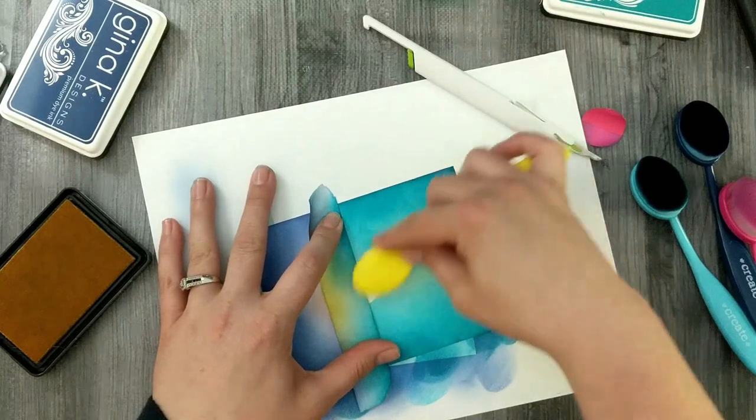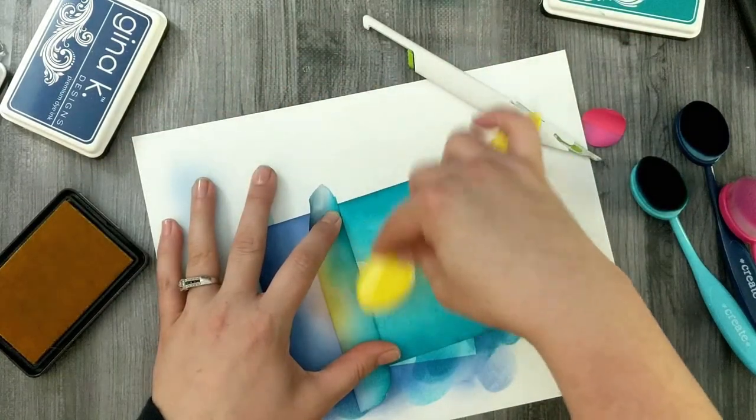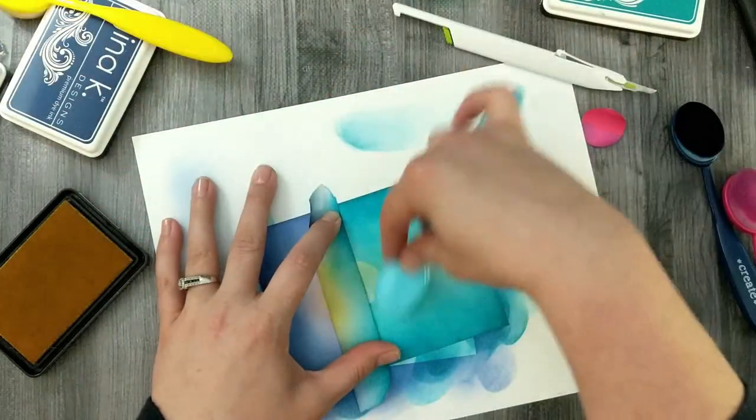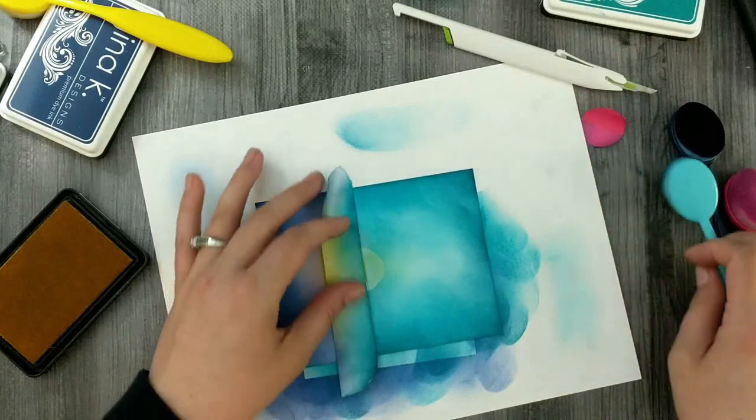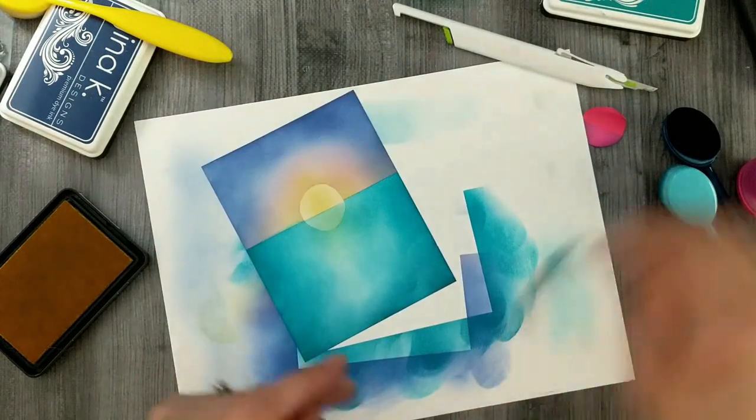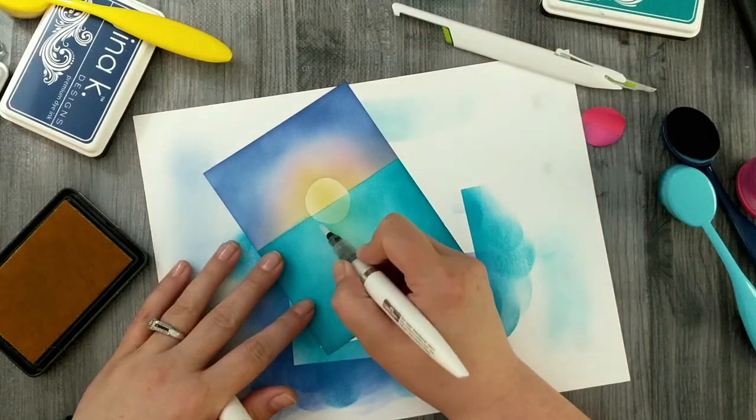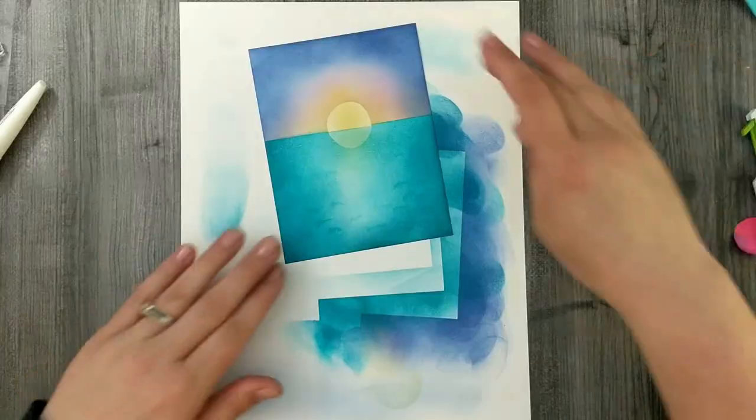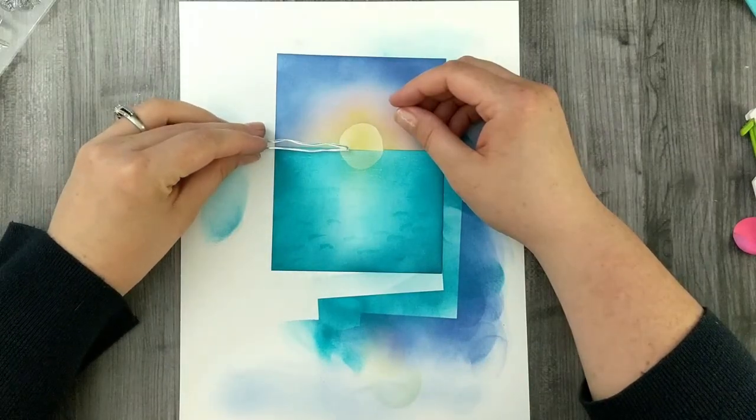Then I take my sweet corn ink and blend in the sun a little bit on both sides of my water and my sky. Then I come back with whatever ink is left on my brush for my ocean and just run that over top of my yellow to create a little bit of faded out greeny blue look in the water. Then I grab my aqua shimmer pen and create a little bit of waves and sparkle in the water.